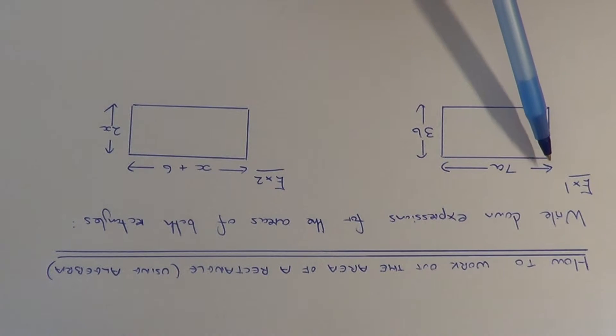Example 1: We need to write down an expression for the area of this rectangle. The length is 7a and the width is 3b. To work out the area of a rectangle, you multiply the length by the width.